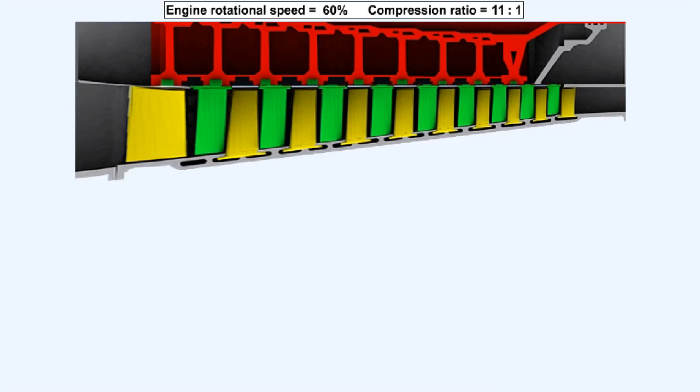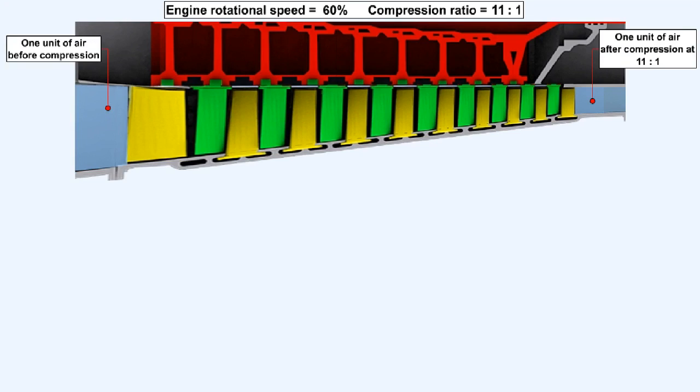Here the engine has been throttled to 60% of its full power setting and the compression ratio has now reduced to 11 to 1. The volume of the same unit of air entering the compressor is larger when compressed only by 11 to 1 than when it was compressed at 22 to 1.